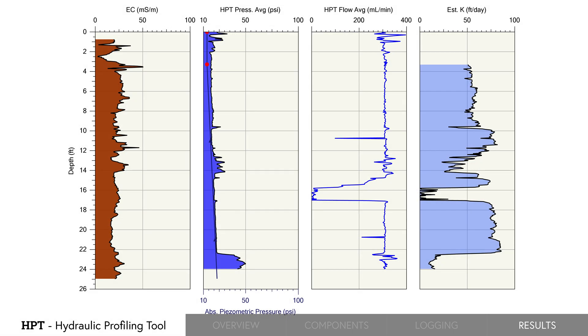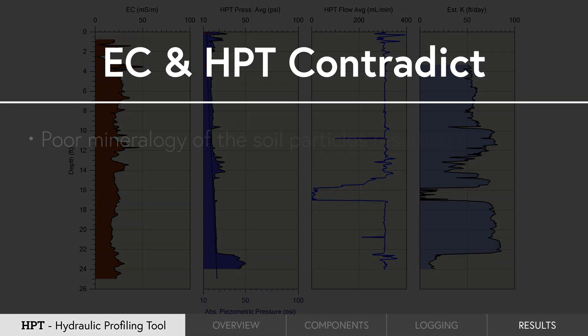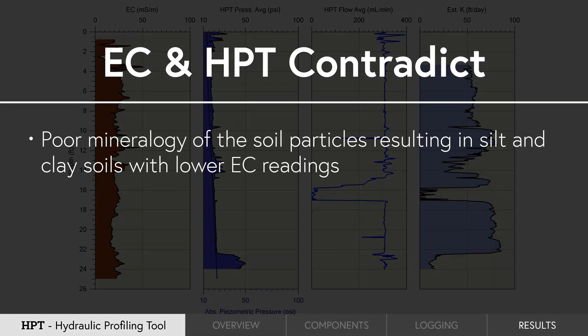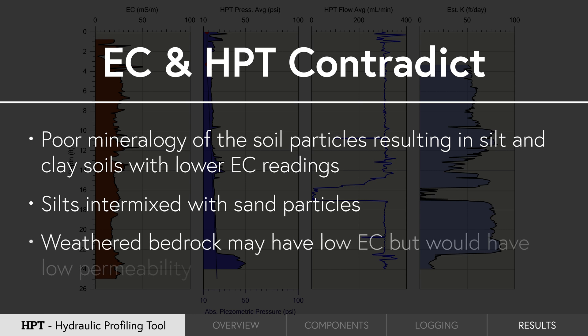It is fairly common to see zones where EC readings and HPT pressure contradict one another. This can happen when there is poor mineralogy of the soil particles resulting in silt and clay soils with lower EC readings. Silts intermixed with sand particles and weathered bedrock may have low EC but would have low permeability.